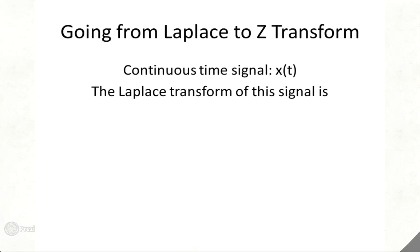So how do you go from the Laplace transform to the Z-transform? You start with the continuous time signal X(t), and you take the Laplace transform of this signal, which is shown below, where S equals sigma plus j omega.